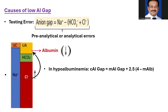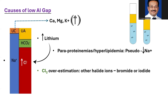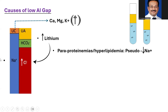Beyond low albumin, you also need to think about unmeasured cations. If these cations become elevated — such as in hypermagnesemia or hyperkalemia — that can also lead to a low anion gap. Similarly, if lithium increases, there is again a compensatory increase in chloride, which leads to a low anion gap. Once you have ruled out these causes, the common cause is low albumin, and then you look for increased cations.